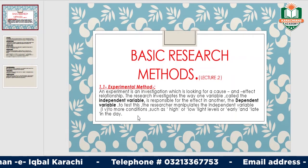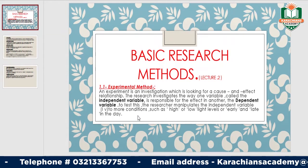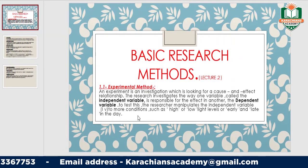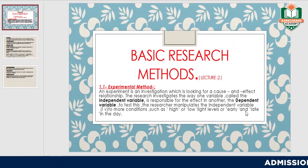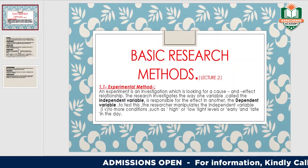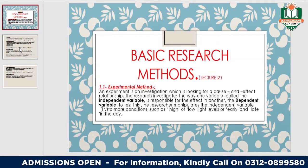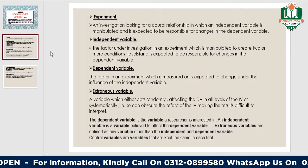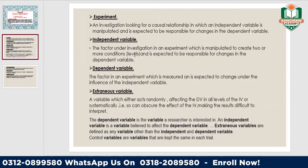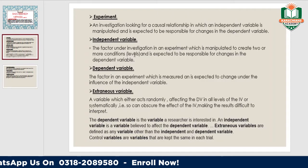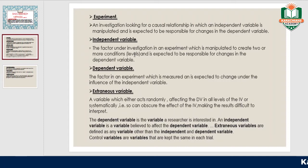When we investigate something, we want to know something, so we study our experiment. The two important things are the independent variable and the dependent variable. When we apply something to our research, we call it the independent variable.